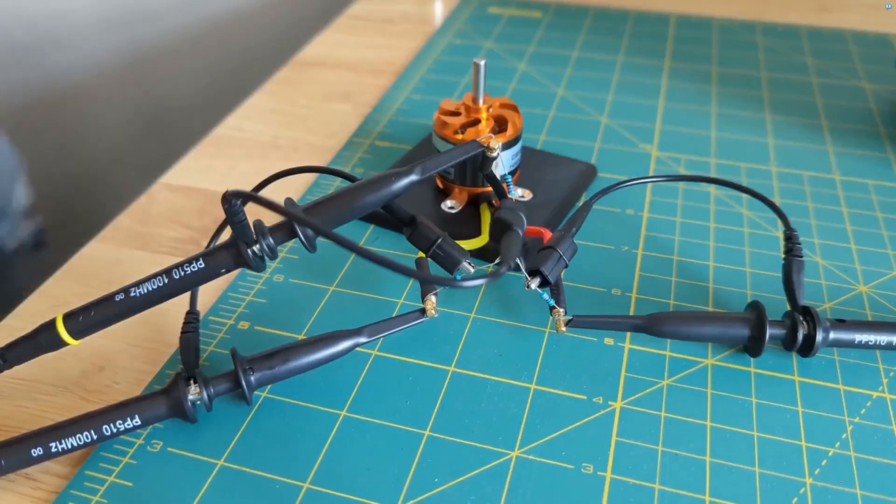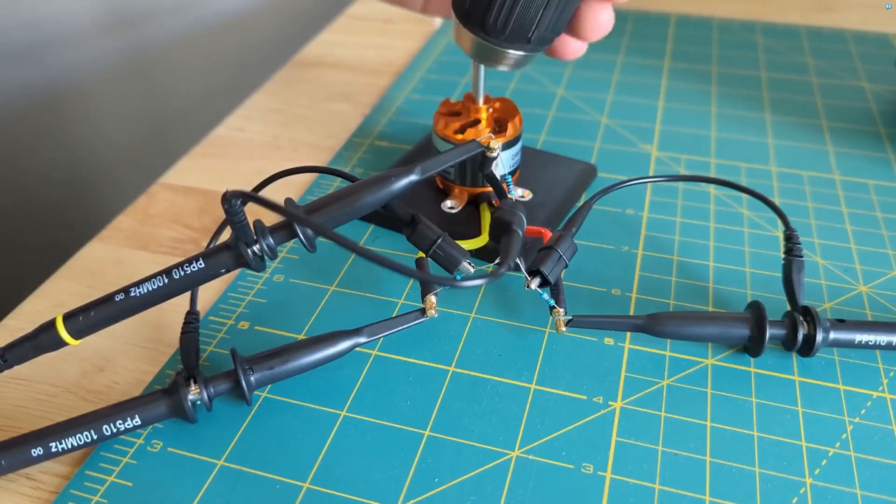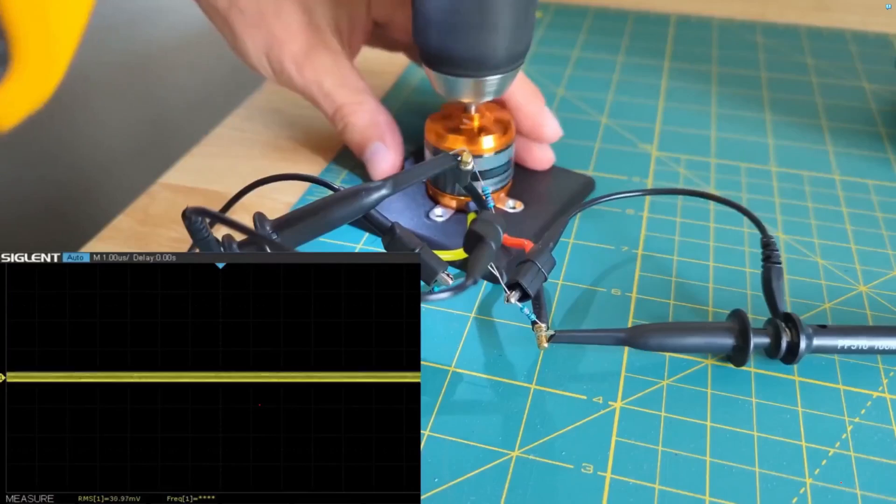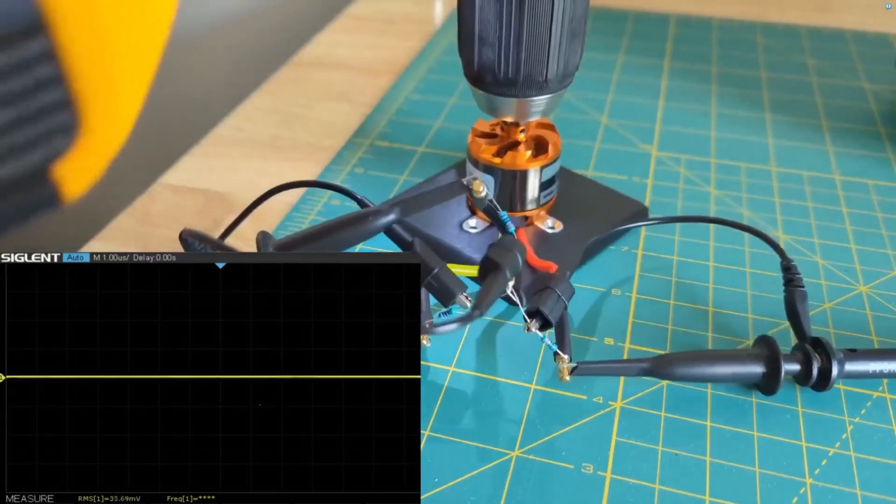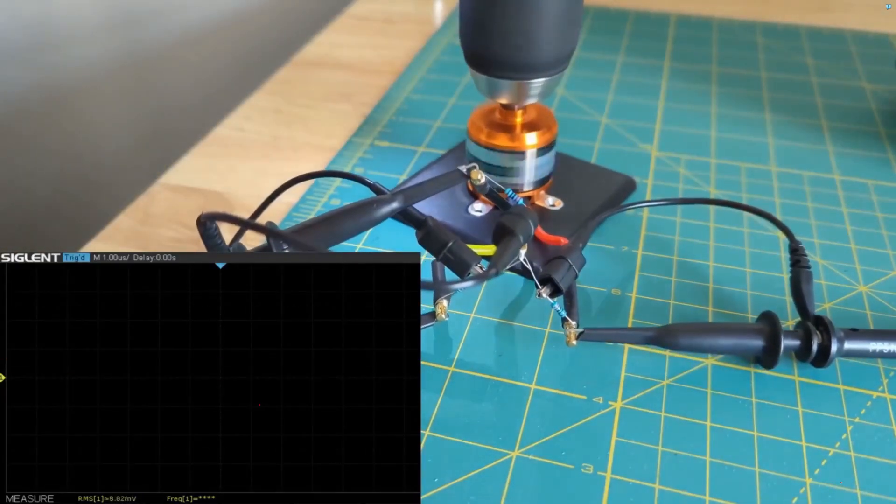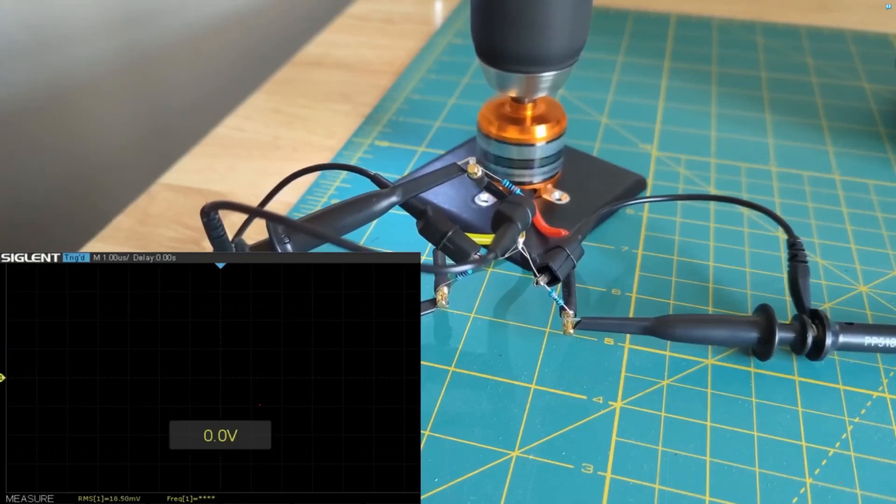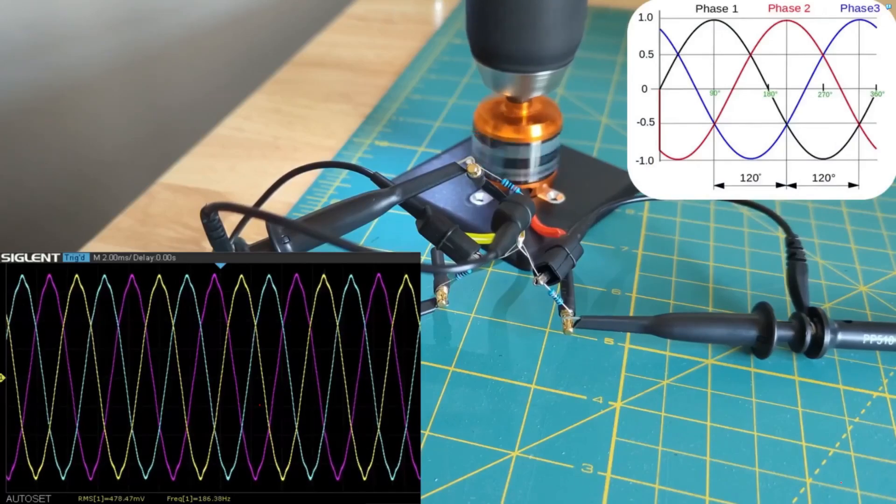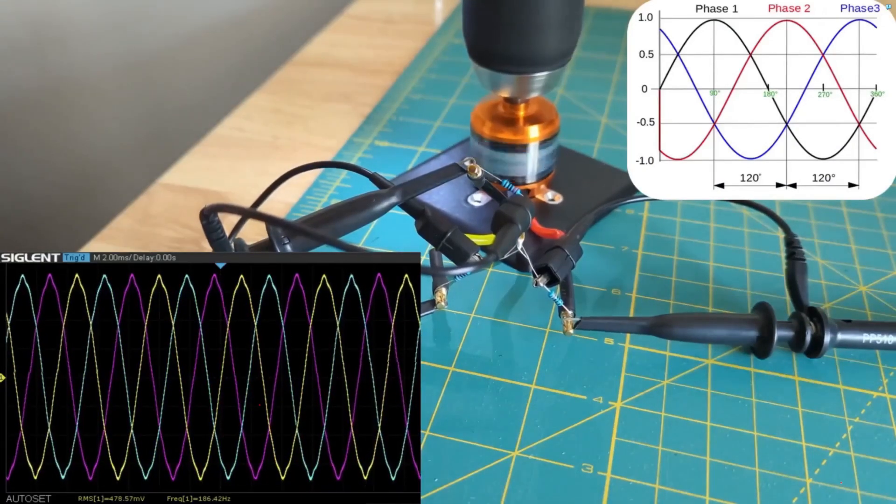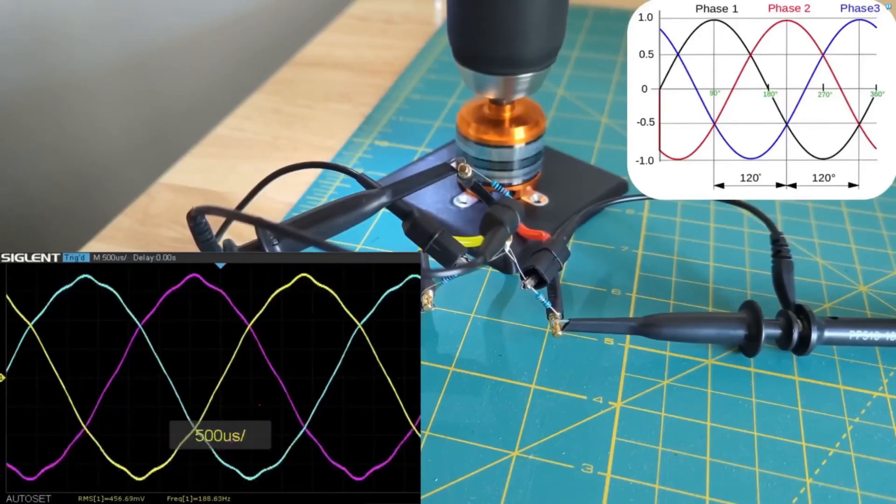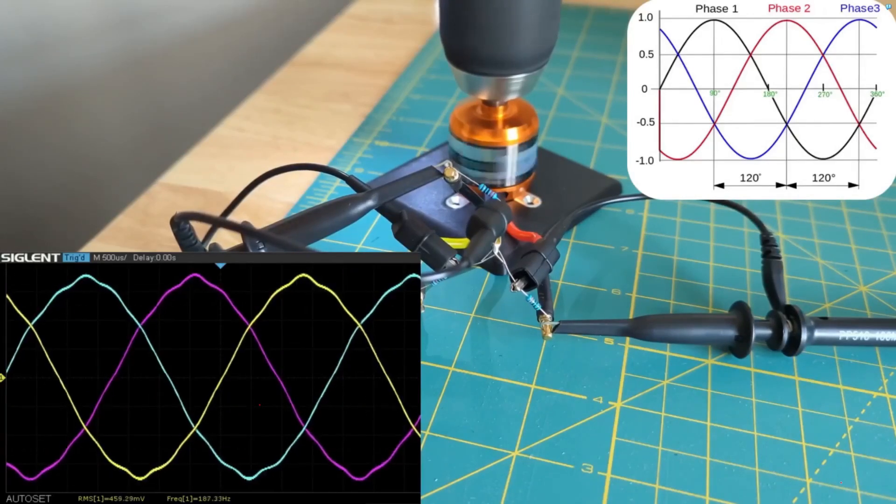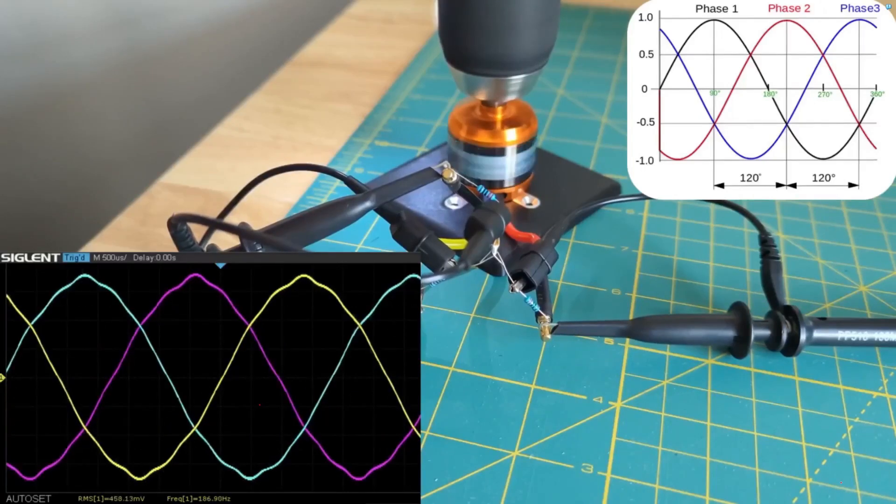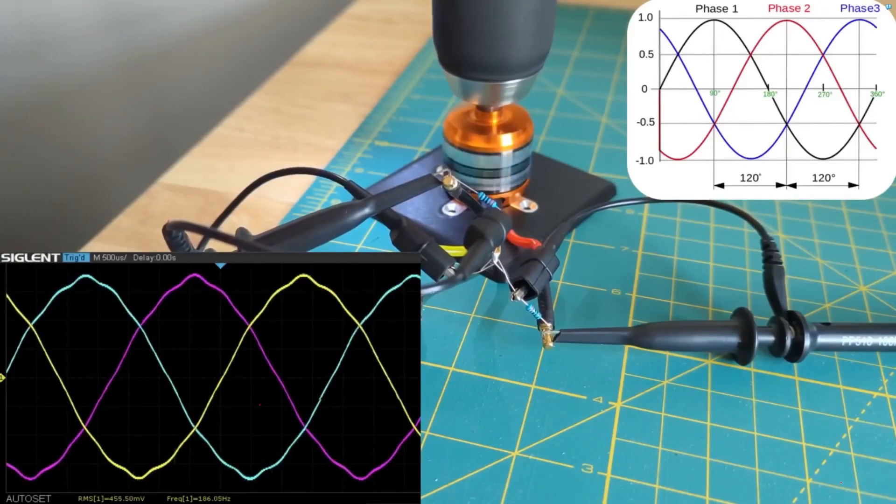I actually got all the probes hooked up to the outside of each of the phases of the brushless motor. And like I said, hooked up the ground reference to the neutral. And like you can see, you actually have all three phases of each of the wires coming out of the brushless motor. So this is just showing you that, for all intents and purposes, the brushless motor is the same as a three phase AC motor.